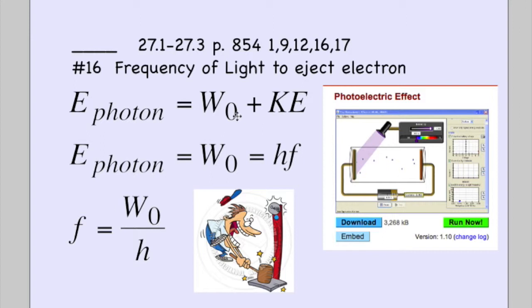And energy of photon is Planck's constant times F. So when we solve for F, you get the work function. Again, we're going to put that 4.3 times 10 to the minus 19th here, divided by Planck's constant.